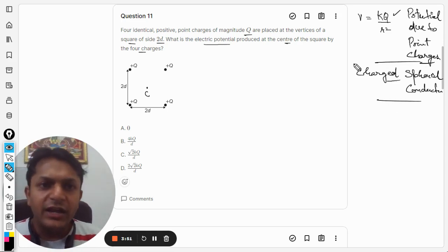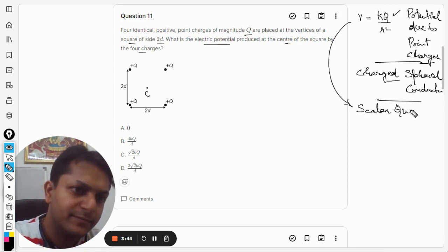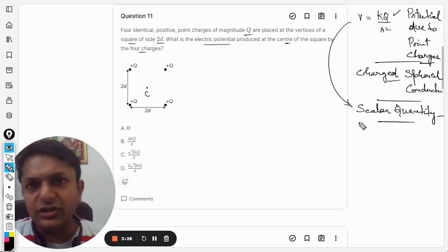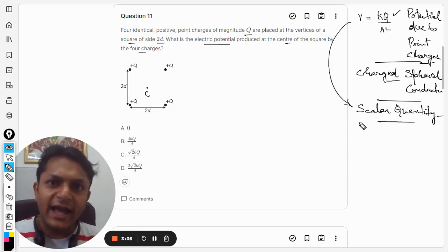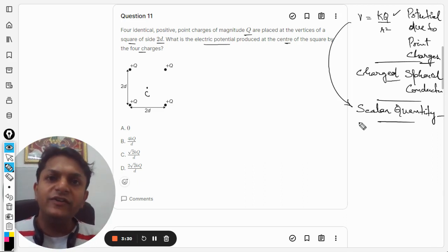Now another thing that you must note here is that potential is a scalar quantity. Scalar quantity means that the potentials like they would be added. The first charge is casting v1 potential, another is casting v2, then v3 and then v4. We are not going to use any vector phenomena here.